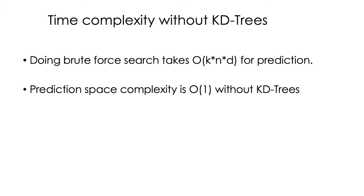If we do nearest neighbor search without using KD-trees, it is kind of like doing brute force search of the neighbors. And that takes O(K·N·D) for predictions, because we need to go over all the training points — that's N — and to calculate the distance we need to use all the dimensions, this is why it's N times D. We also need to multiply by K because we need to do that for each of the neighbors we want to find. The prediction space complexity here is O(1) because we are not using any memory to retrieve the neighbors — they are already located in the training set.